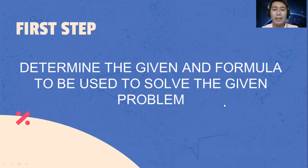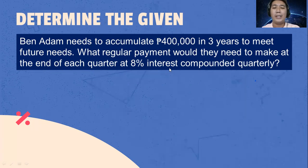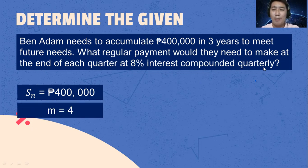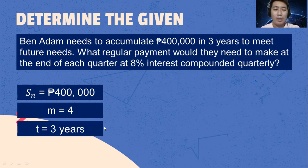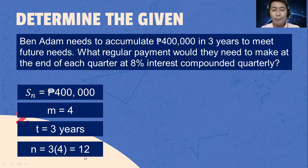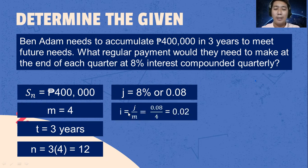Let's follow the steps. Determine the given and the formula. S sub N is 400,000 pesos, the future value. M is 4 because it's quarterly. T is 3 years. N equals 3 multiplied by 4, which is 12 payments over the full term. The nominal interest rate is 8% or 0.08. I equals 0.08 divided by 4, which is 0.02.